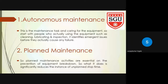The first pillar is Autonomous Maintenance. This involves maintenance tasks and caring for the equipment, starting with the people who actually use the equipment — such as cleaning, lubricating, and inspection. It identifies emergent issues before they actually cause any failure.